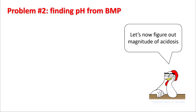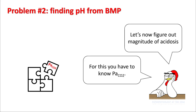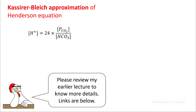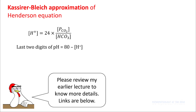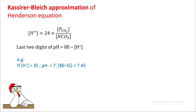Let's go to our next step: finding pH from your basic chemistry. Here we are trying to figure out the missing component, which is PaCO2. We discussed the Kassirer-Bleich approximation of the Henderson equation in a previous lecture. In this case, your hydrogen ion concentration is 24 times PaCO2 divided by bicarb. And if you look at the last two digits of a pH, that should be equal to 80 minus the hydrogen ion concentration. For example, if your hydrogen ion concentration is 35, your pH will be 7.55, because when you subtract 35 from 80 you get 55.